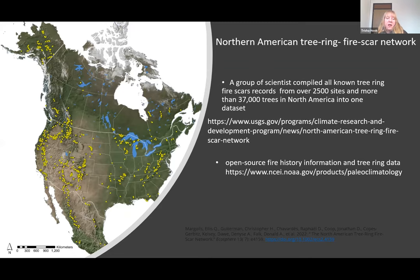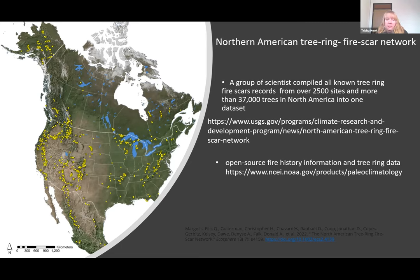There are some great sources of existing fire scar information. A group of scientists amalgamated all the known tree ring fire scar records from over 2,500 sites and more than 37,000 records into one data set. This data set isn't open source yet, but a lot of the published information is available off of the NOAA website, which I've provided a link for. Off that NOAA website, there's also tree ring data and a host of other resource data that goes across North America — I strongly suggest you check it out.